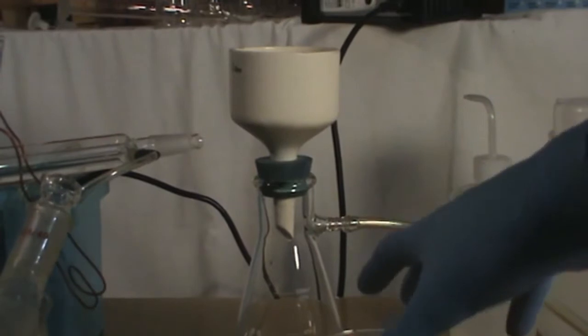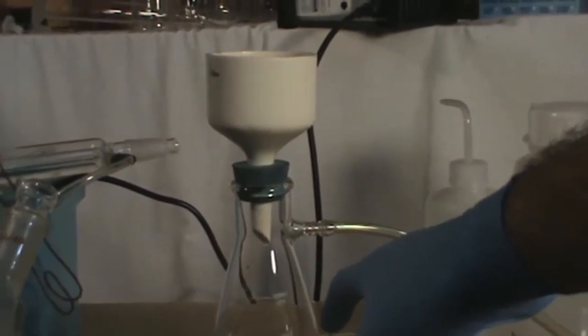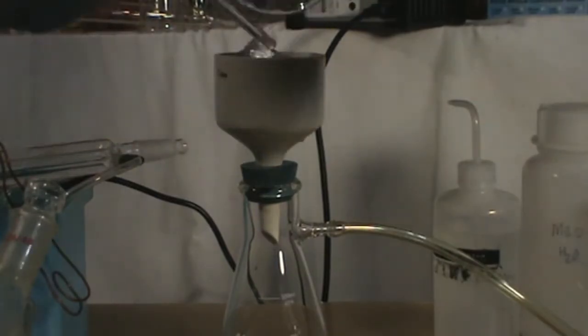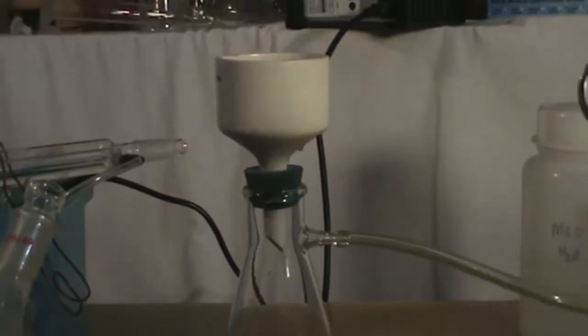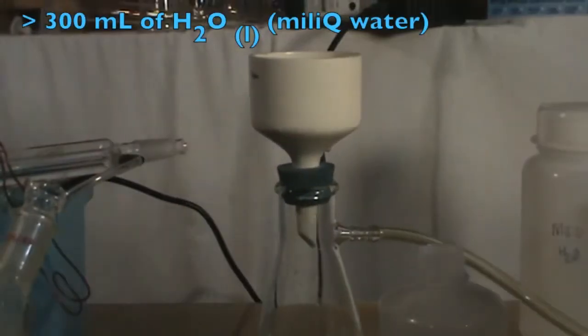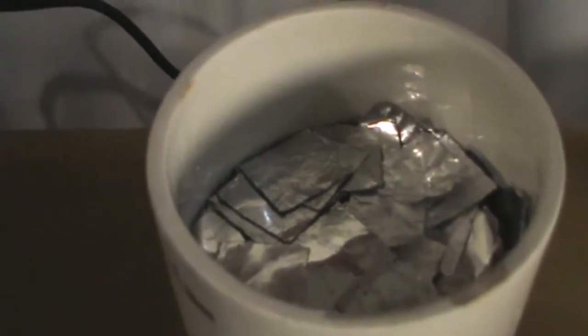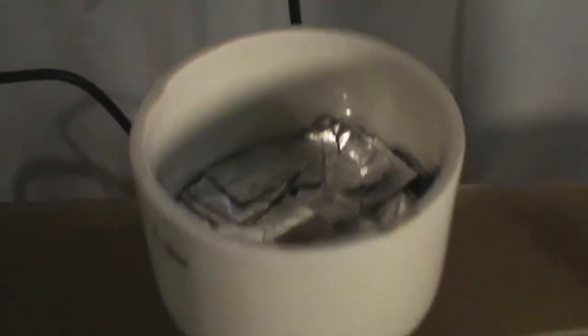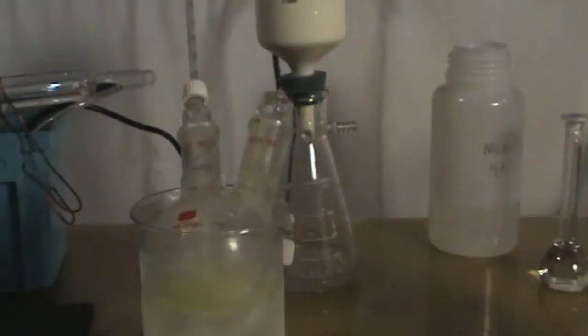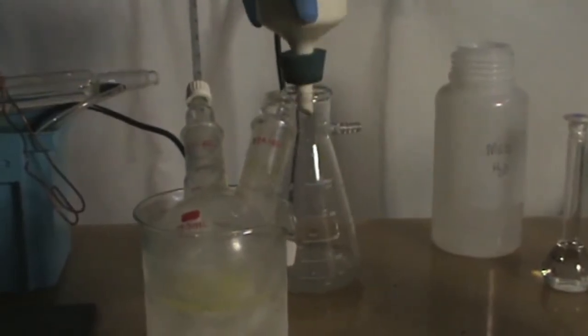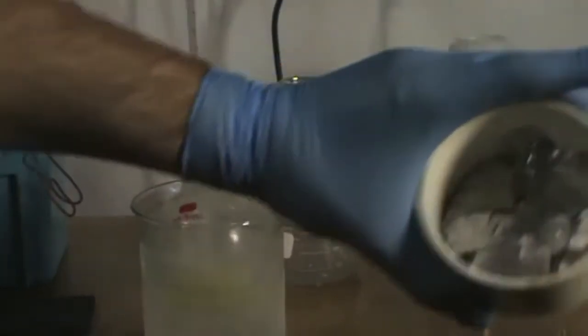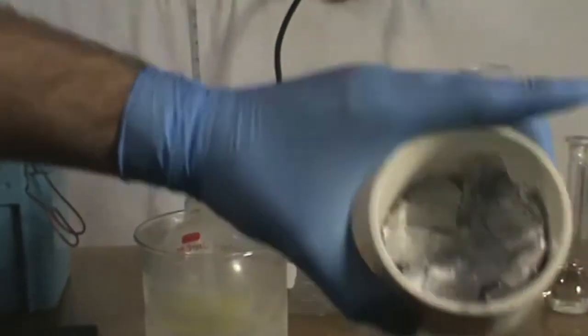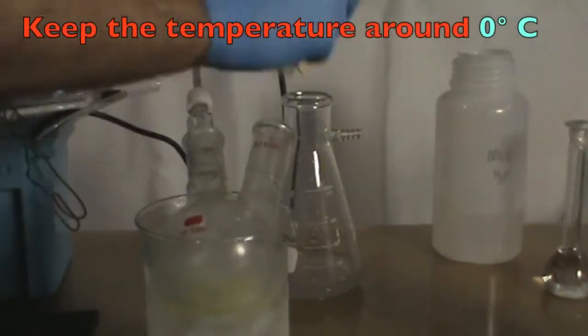After the amalgamation is complete, filter off the activated aluminum from the solution. Rinse the activated aluminum with over 300 ml of MQ water. Get the two neck round bottom flask containing the 1-phenyl-2-propanone solution and immerse it into an ice water bath. Add the activated aluminum into the flask making sure the temperature doesn't rise above 0 degrees Celsius.